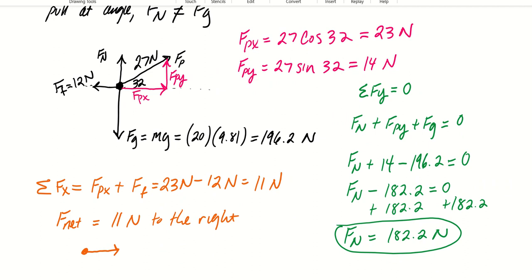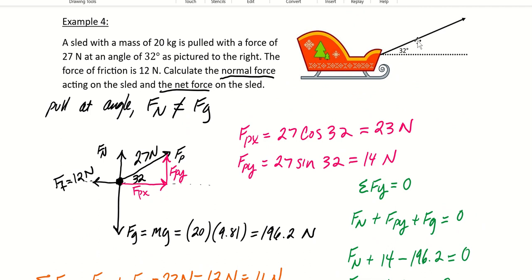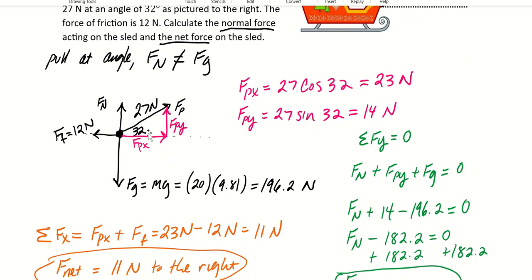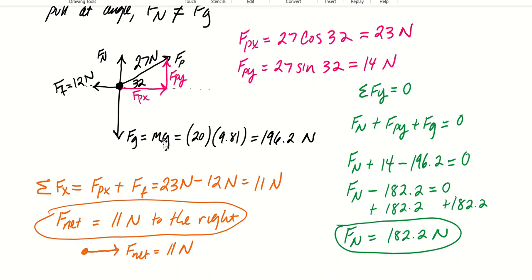The net force can be represented as a vector: F_net = 11 newtons to the right. This is the strategy we use when pulling at an angle — the normal force won't equal the gravitational force, and you must find the components of the pull force to calculate everything else.